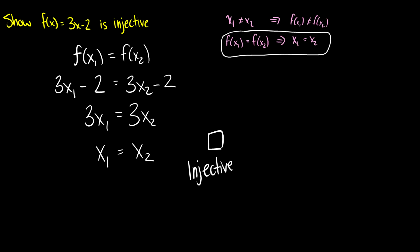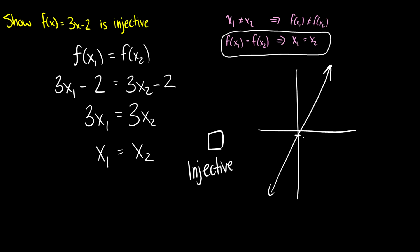So what does this look like graphically? 3x - 2 probably looks something like this, where the y-intercept is -2. When we take a look at the x-axis and pick x = 3, it corresponds to the value 7. We notice that if we go to the left or go to the right, there's no other value that goes to the exact same y value. So there's no other x we can choose that gives us the same y. 3 is the only value that's going to give us f(x) = 7. So that is a proof that 3x - 2 is injective.